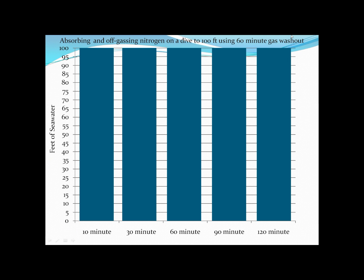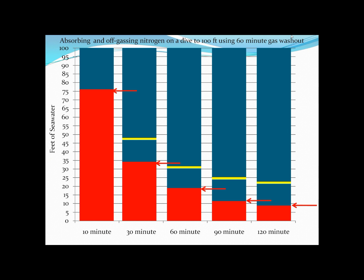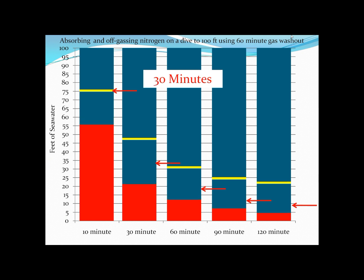Let's now watch the nitrogen leaving our body after a 100-foot dive where we followed our NDL. The 10-minute compartment was the first to reach its M value and end the dive. These were the nitrogen loadings we would have had at the time we decided to surface. Now let's watch the nitrogen leaving the different compartments using a 60-minute gas washout half time for every single compartment. You'll already notice a huge change — that 10-minute compartment is losing nitrogen at a fraction of the speed compared to the EE washout theory.